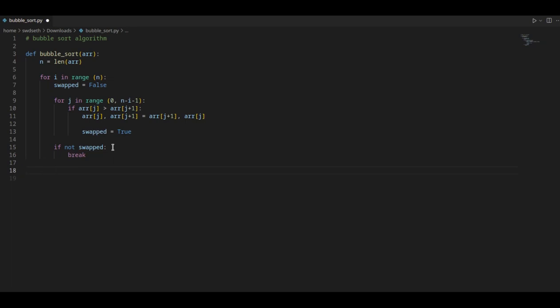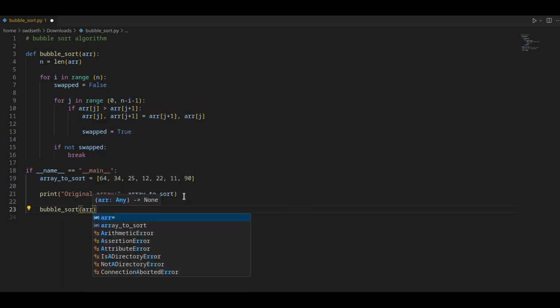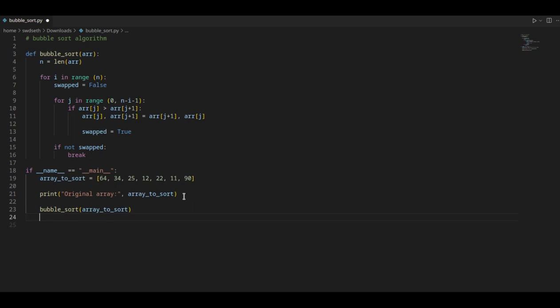And now we'll call the array to sort, so this is the array that we have previously seen, the masses of the marbles from 64 up to 90, and for that we need to call the function bubble sort, and give the array as an argument, so array to sort, it will go into the bubble sort.